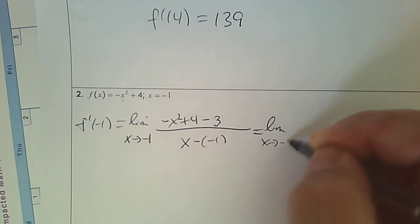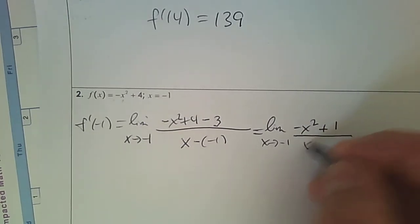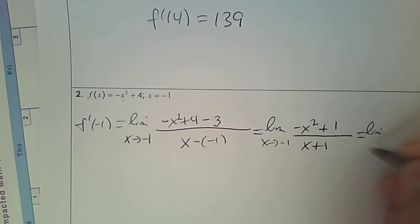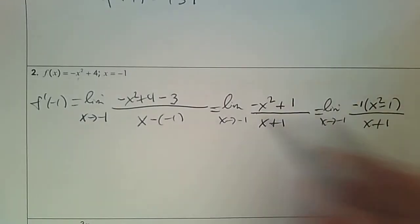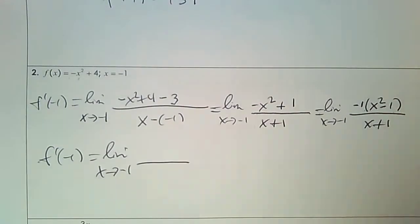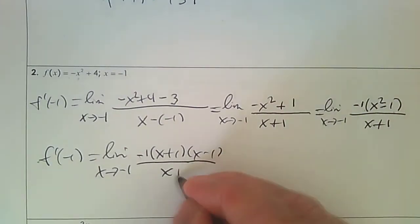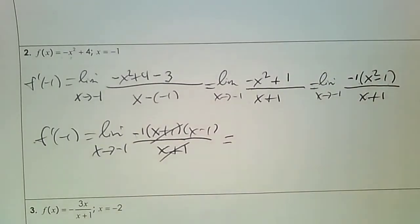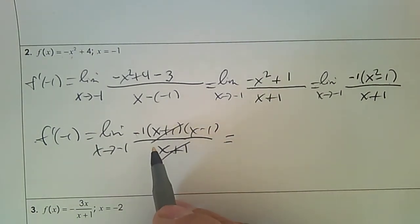And then it's x subtract negative 1 in the denominator. So let's clean that up — that's negative x squared plus 1, and that's x plus 1. To factor this, I'm going to factor out the negative 1 first, so you can see it's a difference of squares. So it's negative 1 times (x plus 1)(x minus 1). So now that the x plus 1 divides out, you can substitute in. Put in negative 1: that's negative 2 times negative 1, so the answer is 2.